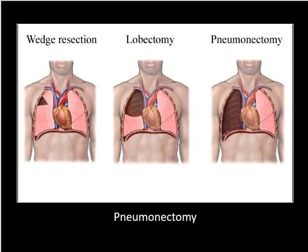Next up we look at pneumectomy codes starting at the bottom of page 199 with code 32440. These codes are divided based upon the extent of the pneumectomy — was it a wedge resection, was it an entire lobe removed, or was it part of a lobe of a lung that was removed? Documentation is going to be key.